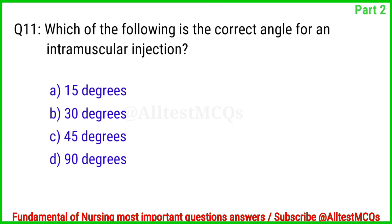Question No. 11. Which of the following is the correct angle for an intramuscular injection? Correct answer is Option D: 90 degrees.